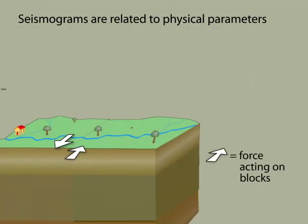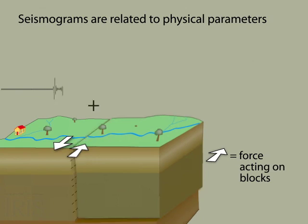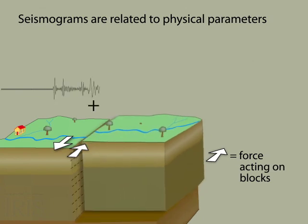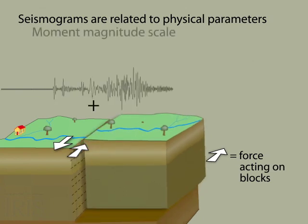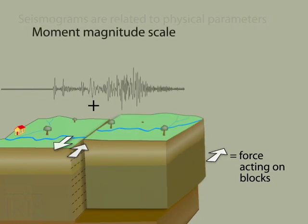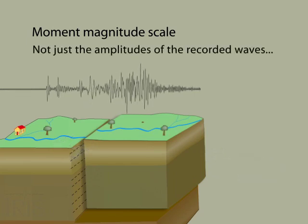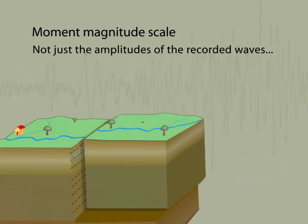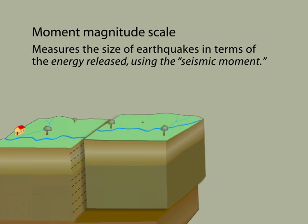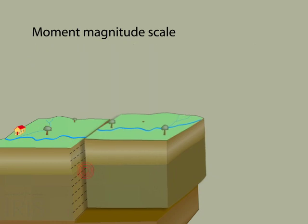In 1979, they connected the seismograph recordings with the actual physical displacements that occurred during an earthquake. The result was the moment magnitude scale. Seismologists no longer look at only the amplitude of seismic waves, but instead use much more information contained in the seismogram to calculate what is called the seismic moment.